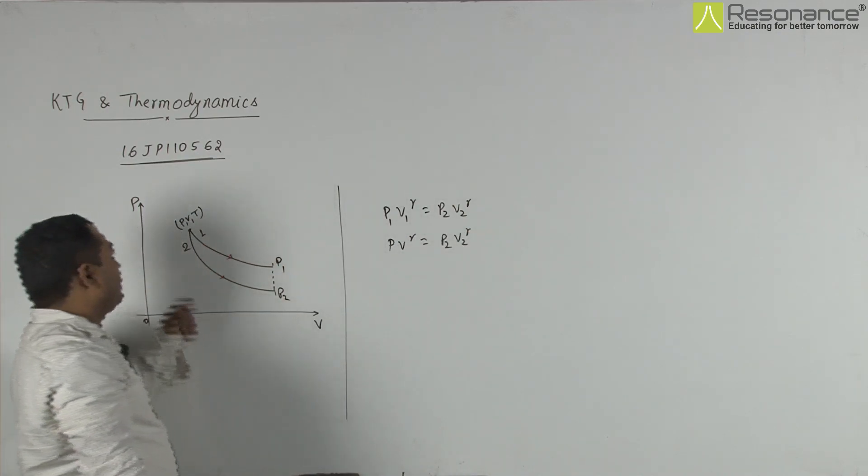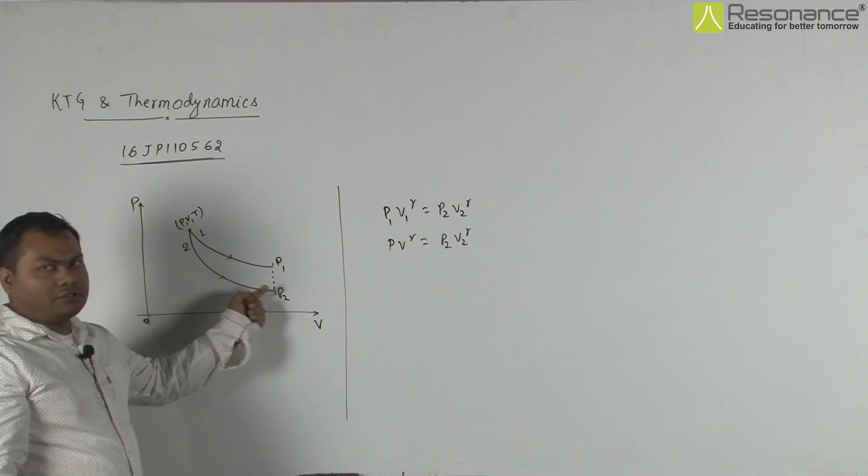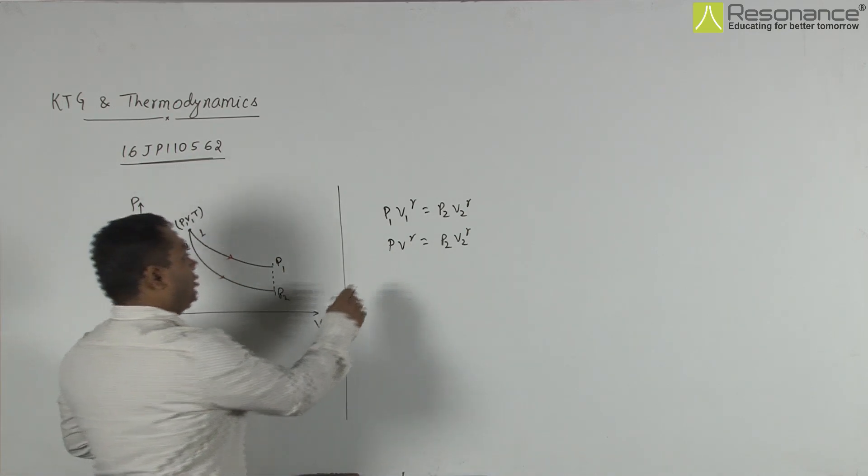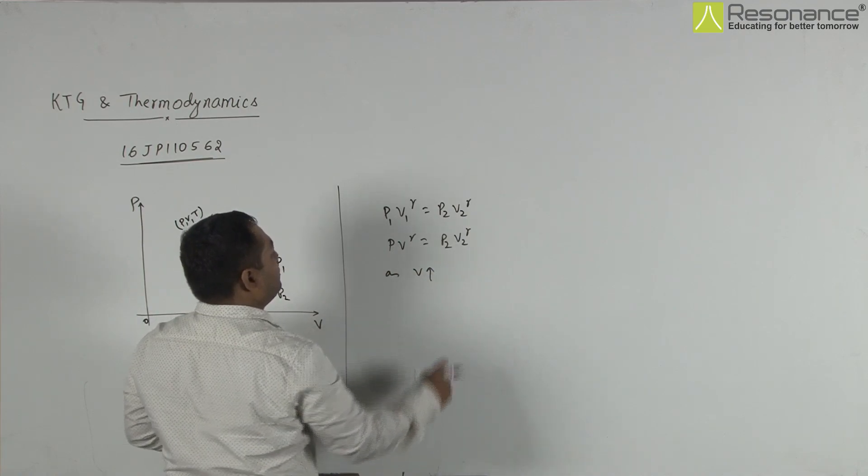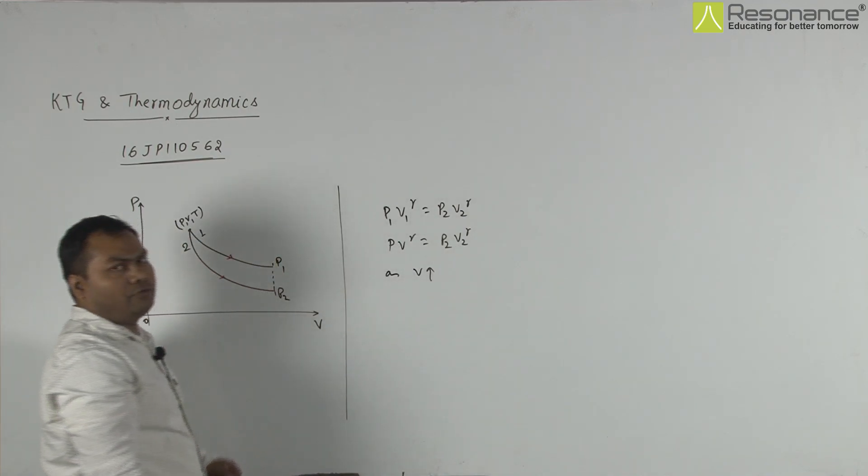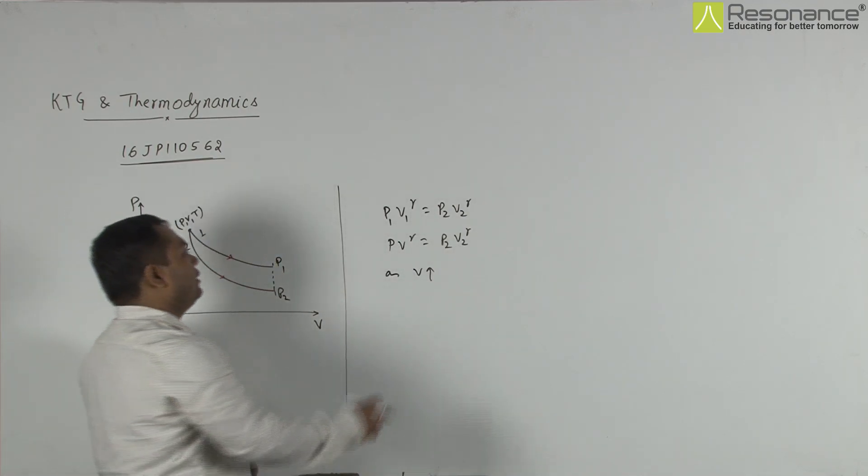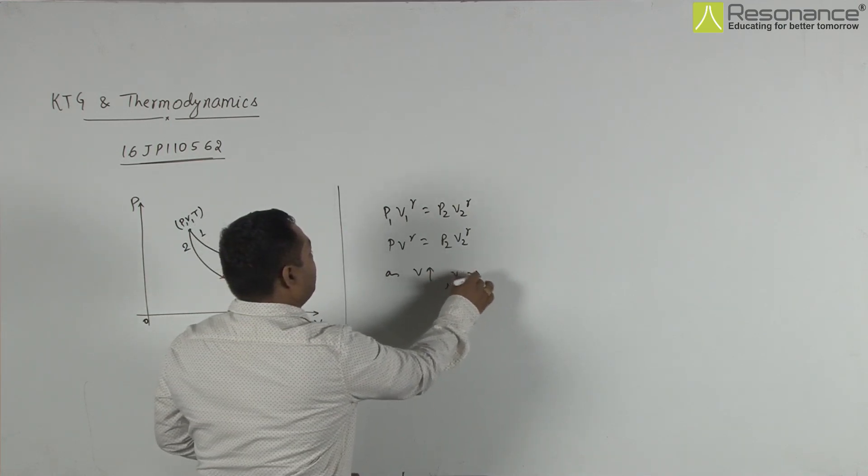Here we see when you go through this, volume increases. As volume increases, V2 is greater than this value V.